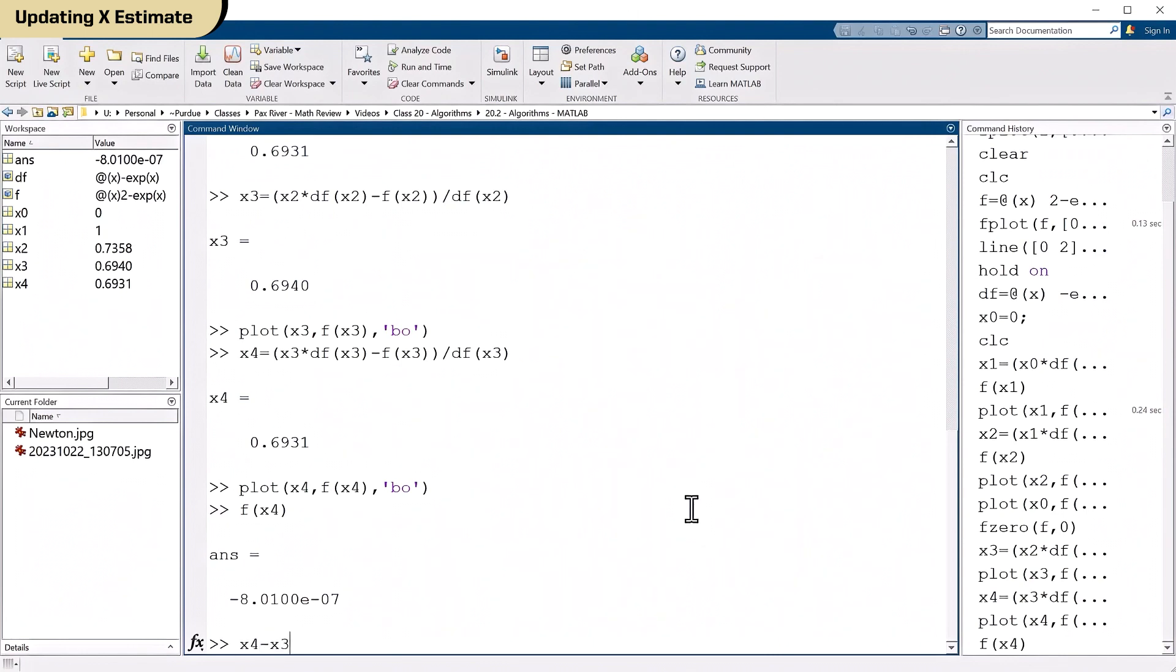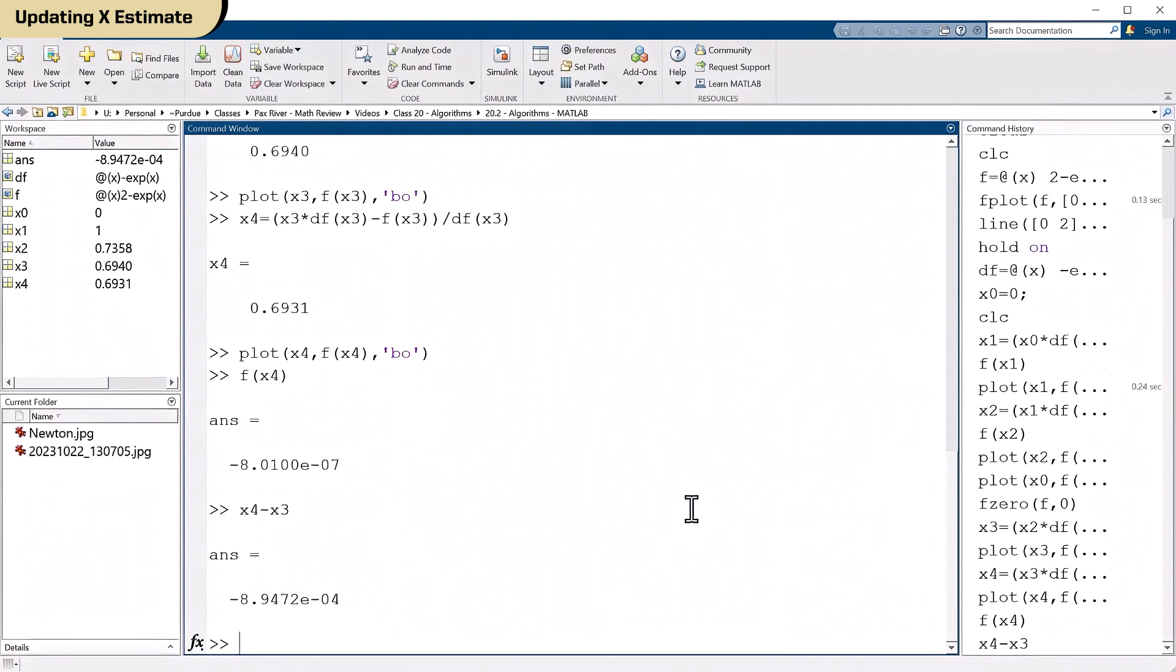Another one could be, what's the difference between successive values of x? Well, what's x4 minus x3? Okay, it's eight, nine times 10 to the minus four, also very small. So we could make the absolute value of that some real small number and call that an exit criteria. So we've been able to estimate the root, the method clearly converges on an answer, and it's the right answer. And we also have a very good way of describing numerically how close we are to the root.